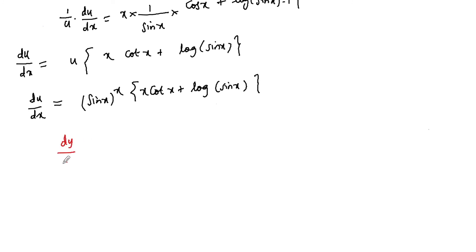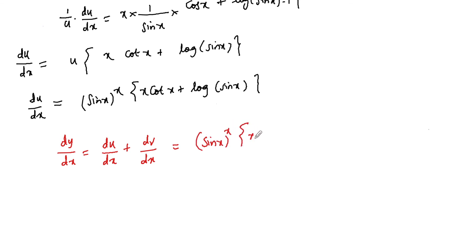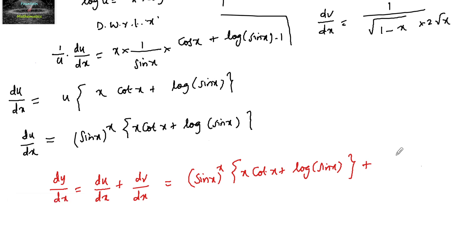The final answer is dy/dx = du/dx + dv/dx = (sin x)^x · (x cos x / sin x + log(sin x)) + 1 / (2√(x(1 - x))). We can also write the denominator as 2√(x - x²). Thank you.